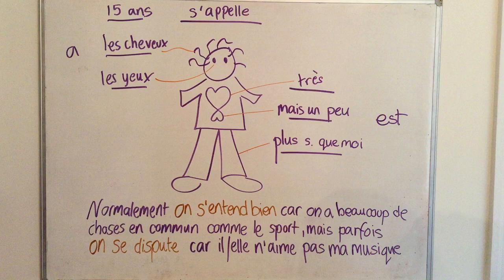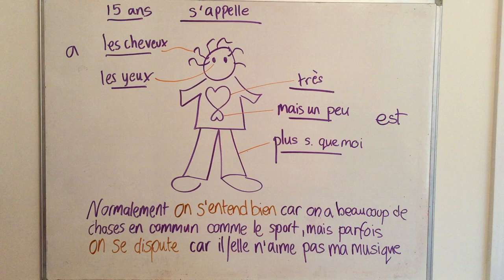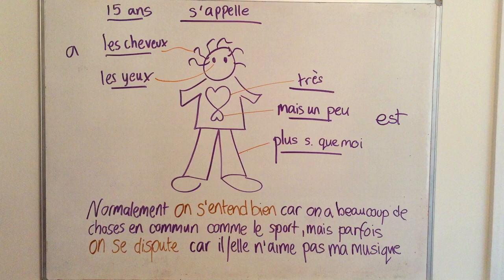You could be asked in your oral or your writing to describe a person. It could be your best friend or a member of your family, and you need to include certain things. Have a look at this picture on the board — picture it when you're asked the question and make sure you include everything on here.